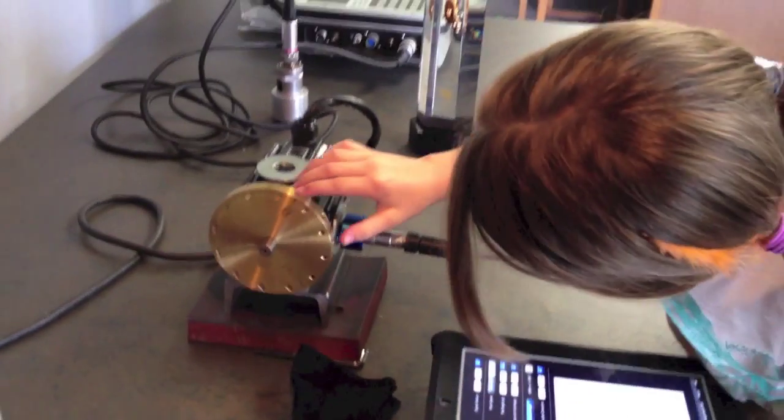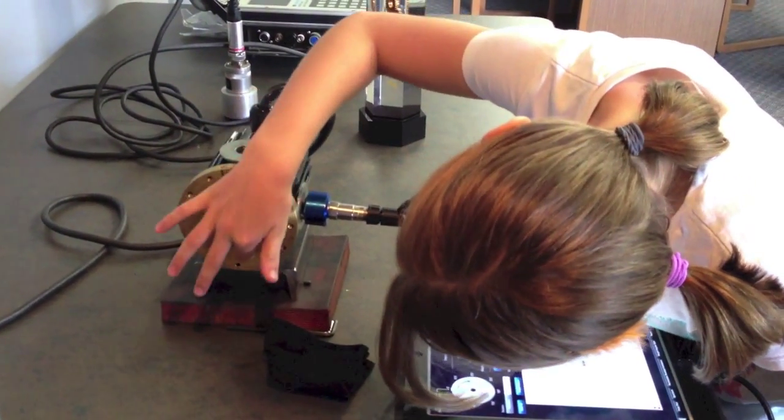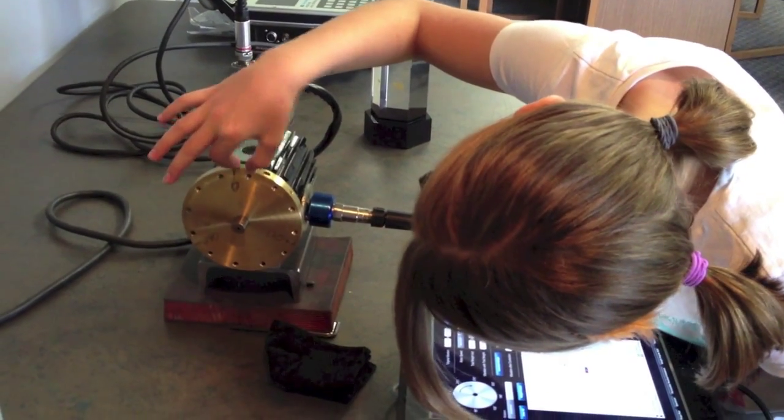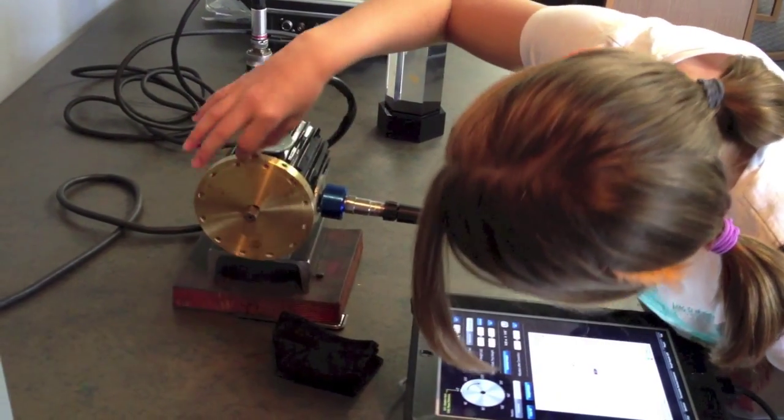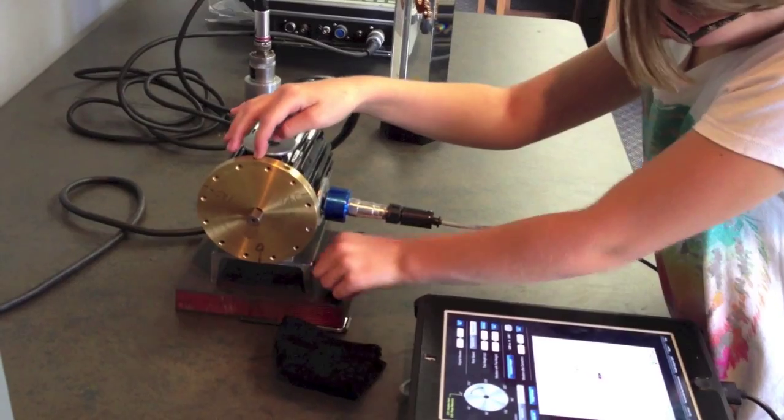330 is right about here, so the heavy spot would be here. I would go right across from it and put my screw right in there.